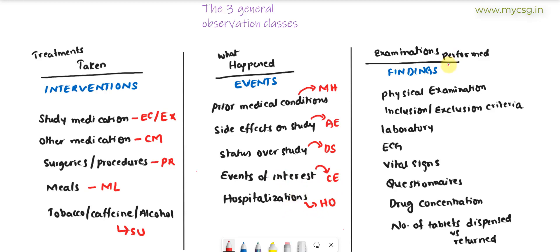The third class is examinations performed — what SDTM calls the findings domain. When the subject visits the clinical site, the investigator physically examines them, checking for things like skin rashes or eye abnormalities. That physical examination information is stored in a dataset called PE. At study entry, we also examine whether the subject meets inclusion criteria or any exclusion criteria specified in the protocol, and those findings are stored in a domain called IE.